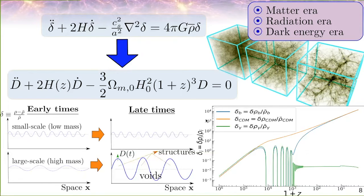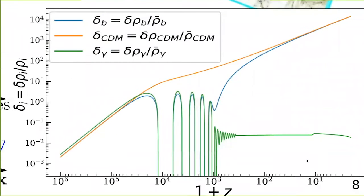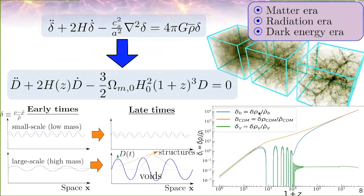In this plot we see the behavior of the density field for each component — baryons, cold dark matter, and radiation. While radiation does not contribute much to creating structure, baryons follow the pattern of cold dark matter. This is very important because we can form virialized structures only when we include cold dark matter. Without cold dark matter, it was a problem for several years — the solution is to include cold dark matter.